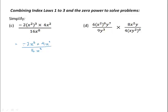If we simplify the numerator, negative 2 times 4 is negative 8, and x to the power 6 times x to the power 2 is x to the power 6 plus 2, or x to the power 8. 8 goes into 8 once and into 16 twice, and x to the power 8 divides into x to the power 8 once. So this expression simplifies to negative one half.